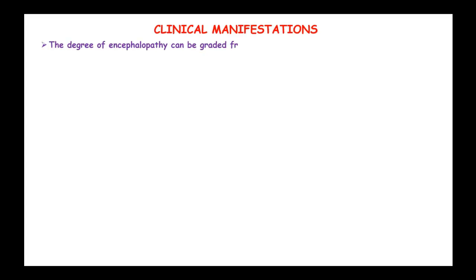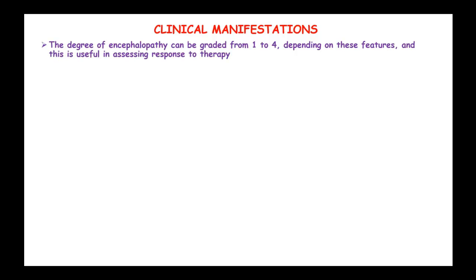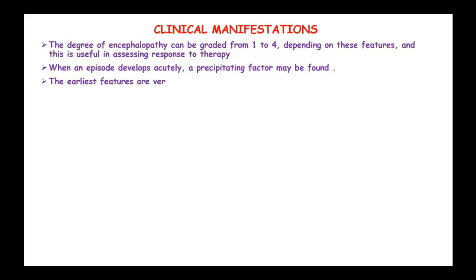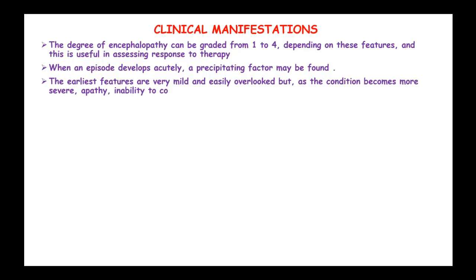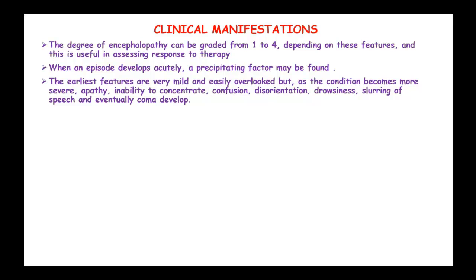The degree of encephalopathy can be graded from grade 0 to grade 4 depending on the features, and is useful in assessing response to therapy. When an episode develops acutely, a precipitating factor can be found. The earliest features are very mild and easily overlooked, but as the condition becomes more severe, apathy, inability to concentrate, confusion, disorientation, drowsiness, slurring of speech, and eventually coma develops.